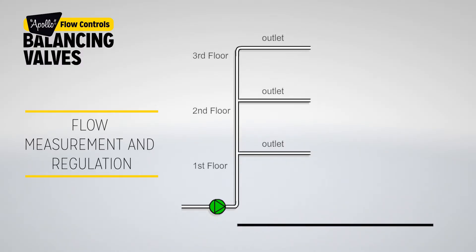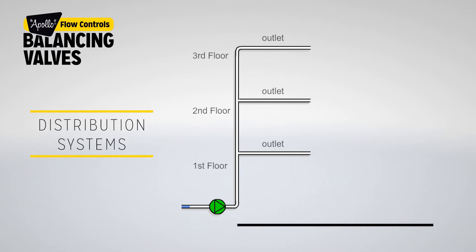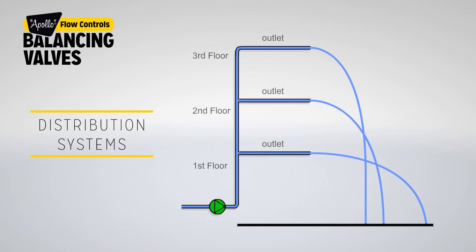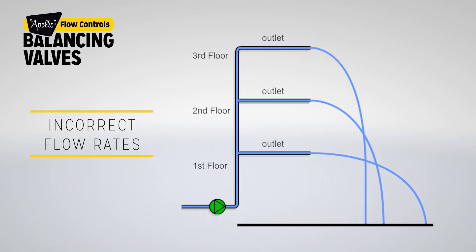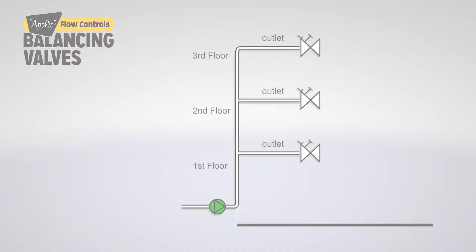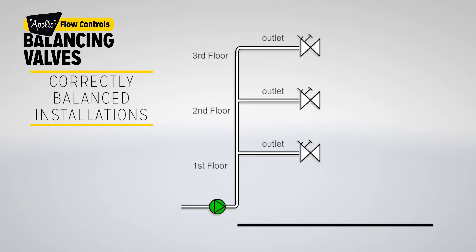The consideration for flow measurement and regulation arises from the fact that it is impossible to change pipe size or pipe configuration alone to achieve a balanced system. In most distribution systems, delivering the correct flow rate to each individual terminal can be a problem due to the different levels of resistance throughout the system. Incorrect flow rates in different zones of the building may lead to energy wastage or variable levels of occupier comfort.